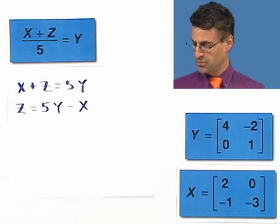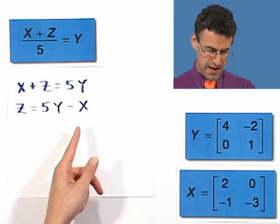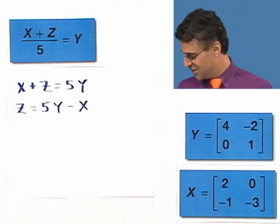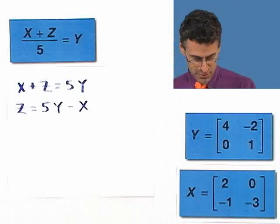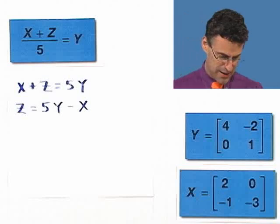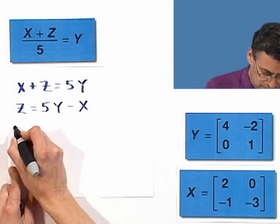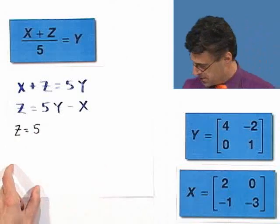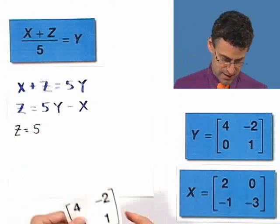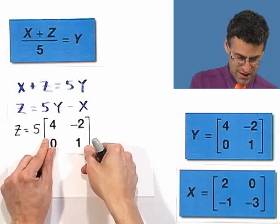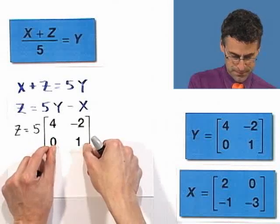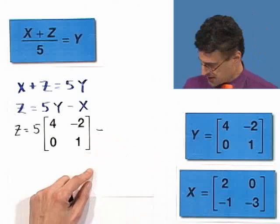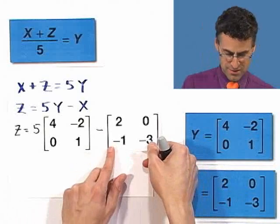Well, great. Now I want to substitute what we actually know about y and x. However, they're not numbers. They're actually matrices. So what I want to do is say, okay, so z equals 5y, which is that right there, minus x, which is this right here.